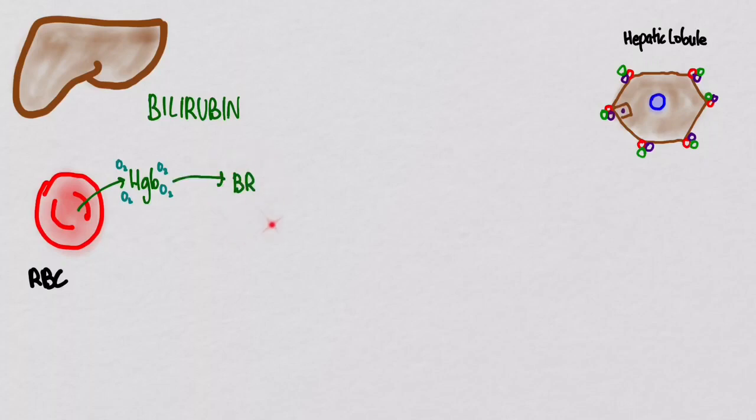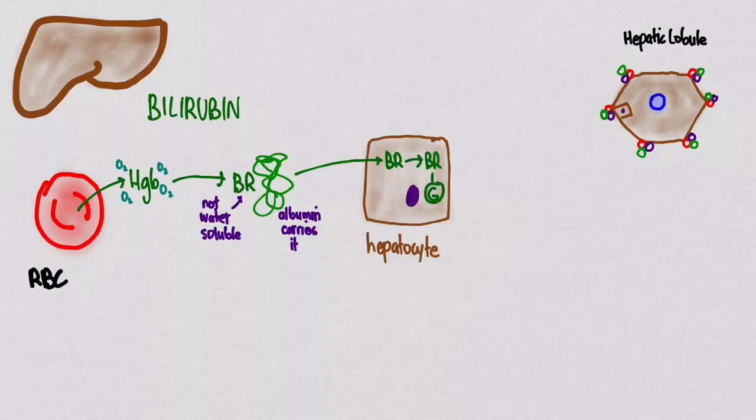Now, this thing is not soluble in water or blood, and so it needs to be carried around. And who does the carrying? Albumin does. So this bilirubin needs to be made water-soluble so that we can get rid of it, and so we take it to a hepatocyte where it can get conjugated with this glucoronyl group here, which I depicted with a little G on it.